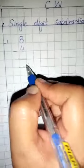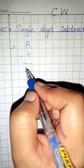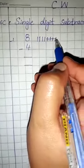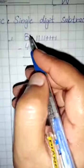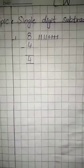First question is 8 minus 4. First we draw 8 lines: 1, 2, 3, 4, 5, 6, 7, 8. Now how many lines we cut? 4 — 1, 2, 3, 4. Now we will count the remaining lines: 1, 2, 3, 4. We will write 4.